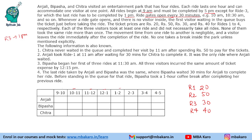Each of the 3 visitors took at least 1 ride and did not necessarily take all rides. None of them took the same ride more than once. The movement time from one ride to another is negligible and a visitor leaves the ride immediately after completion. No one takes a break inside the park unless mentioned explicitly — so if no break is mentioned, assume they will continue to take the next ride as soon as the previous one is over.